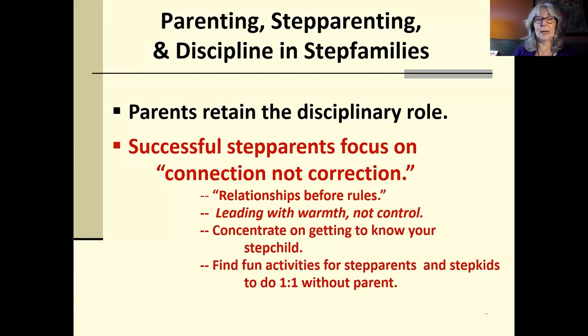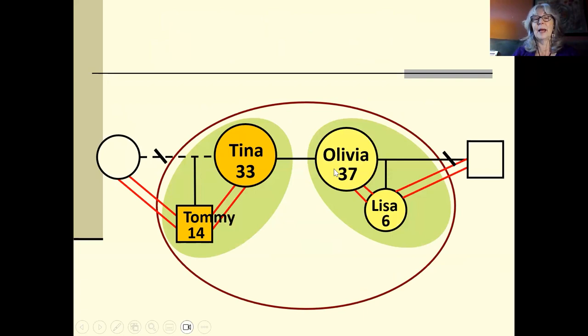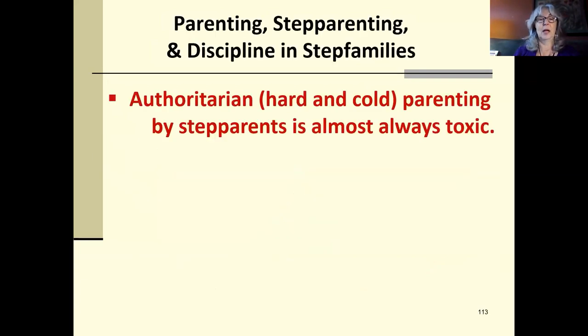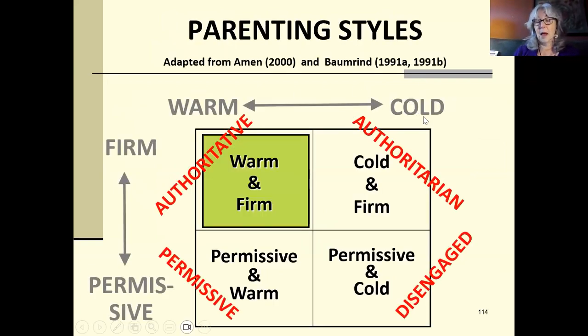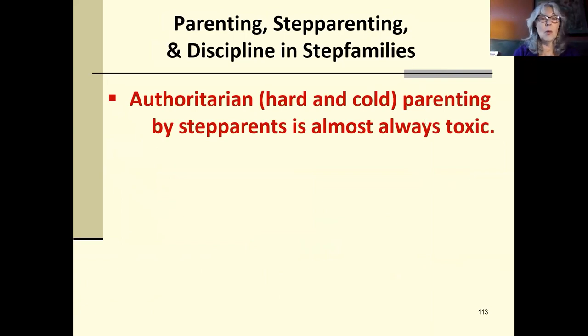It turns out that shy Tommy loves basketball. Olivia was captain of her basketball team. These two guys can shoot baskets. He doesn't have to talk. He doesn't have to be warm with her. But that helps them begin to make a relationship. And they start shooting hoops together. Authoritarian, that upper right, that's this, authoritarian, hard and cold parenting by step parents is almost always toxic in step parents, step child relationships. And unfortunately, it's easy for step parents. This is leading with high control and low warmth. And by the way, even cultures that value authoritarian parenting, this doesn't work in step parents, step child relationships.